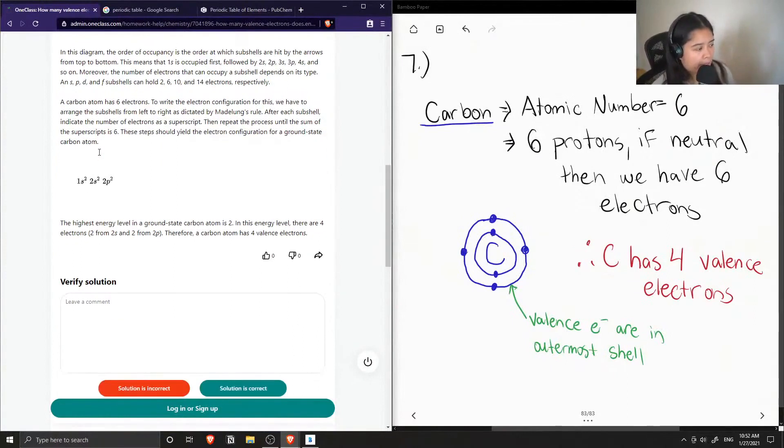The highest energy level in a ground state carbon atom is 2. So in this energy level, there are four electrons, 2 from the 2s and 2 from 2p. Therefore, a carbon atom has four valence electrons.